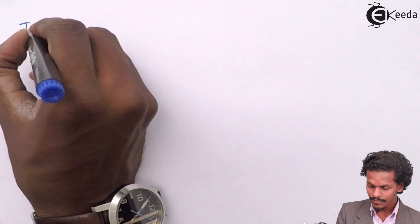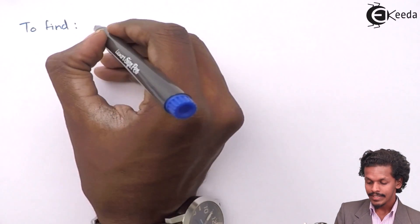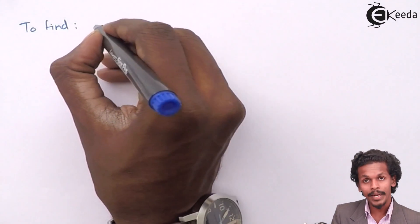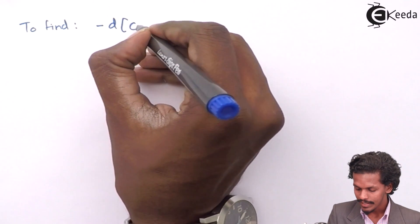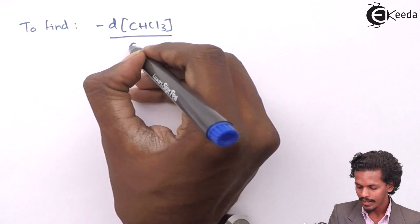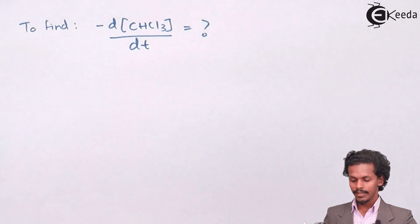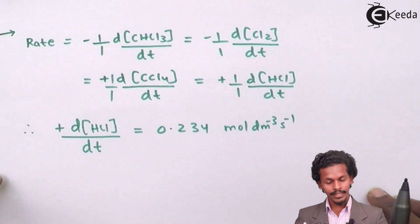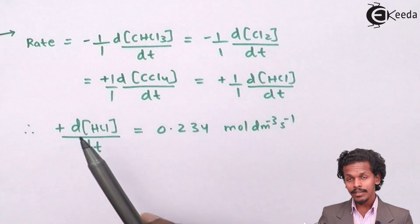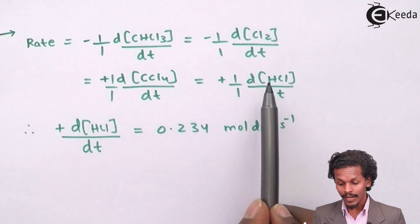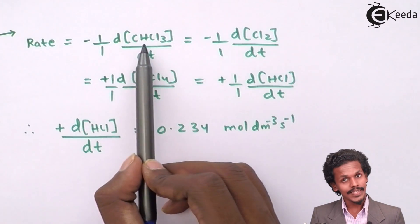we could find the rate of consumption of CHCl3 that is chloroform. Since it is for consumption of CHCl3, I would write that we have to determine minus d of CHCl3 upon dt. This is what we have to calculate. So by looking at the previous data, the quotient which has a data is for HCl.